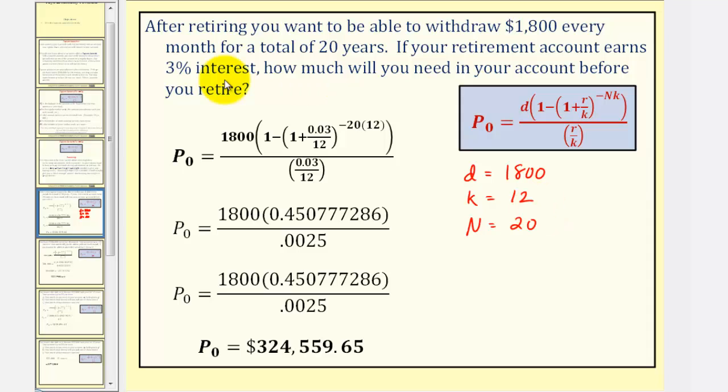The account earns 3% interest, where R would be 3% as a decimal, and therefore R is equal to 0.03. Our goal here is to find P sub zero, the necessary balance in the account.